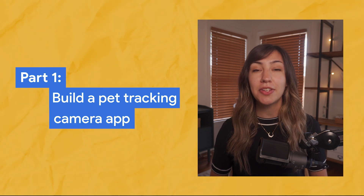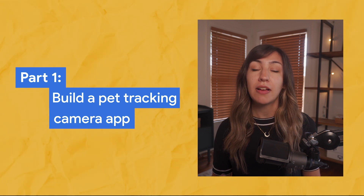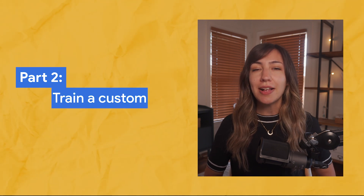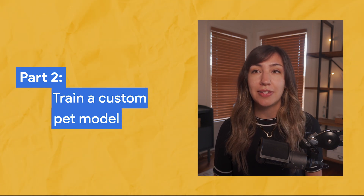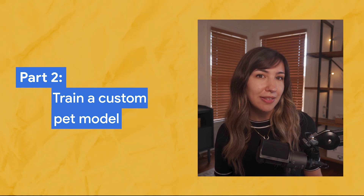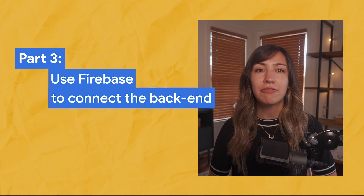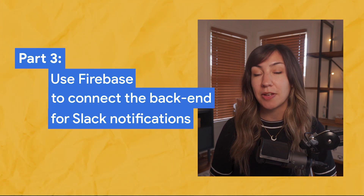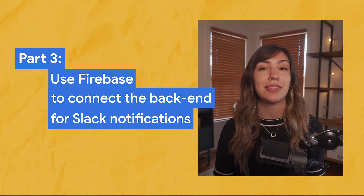Our app is going to work in three parts. First, we'll build a pet tracking camera app that runs on your phone and detects common pets like cats and dogs. Then we'll make our tracker even more powerful by training a custom pet model on Google Cloud to detect chickens. And finally, we'll connect our front end to a back end built in Firebase so that we can store data and send messages to Slack.